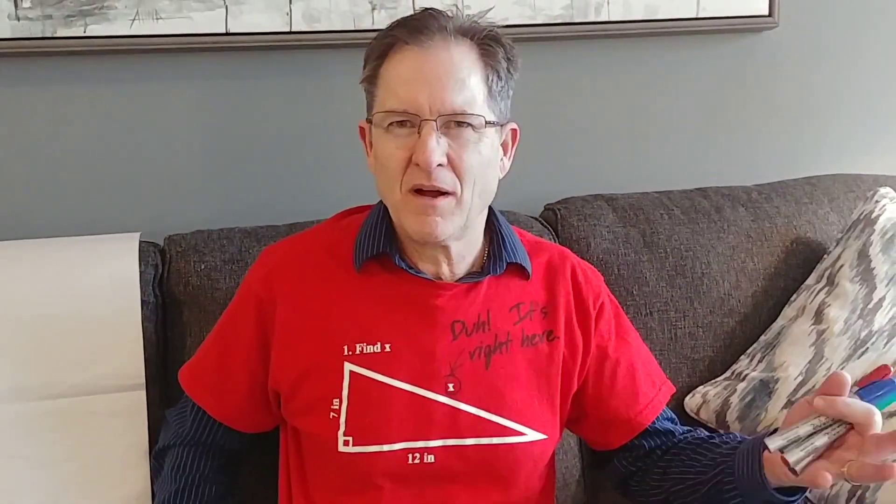The square root of 196 is 14, so it's got to round off to about 13.9. Check it out on the calculator.